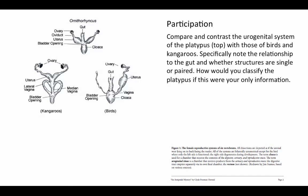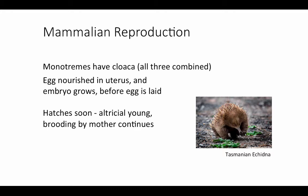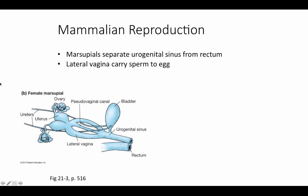The egg has a relatively large yolk, and it's nourished in the uterus by that yolk. The embryo grows to quite a great extent before the egg is laid, but the offspring hatch at a very early stage of development — we call this having altricial young. Care and brooding by the mother continues; she keeps the hatchling warm and feeds it milk using mammary glands that do not have any nipple or teat. The mother secretes milk directly onto the fur, and the young suck the milk off of the fur.